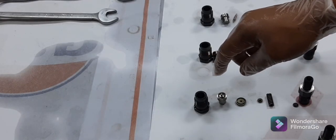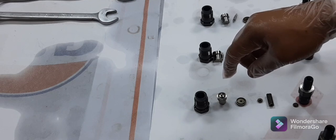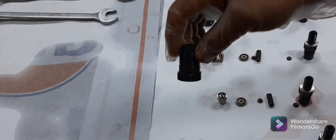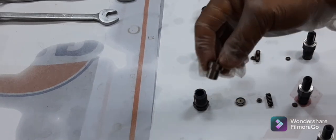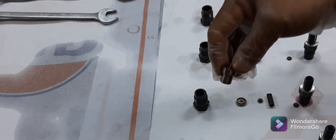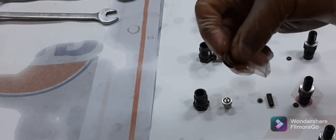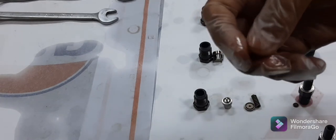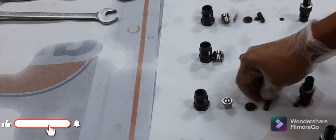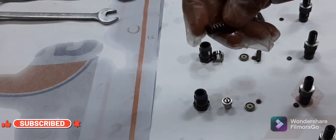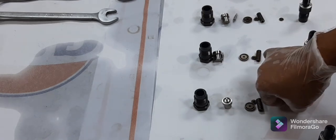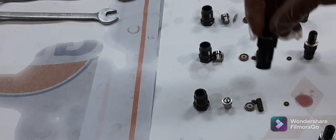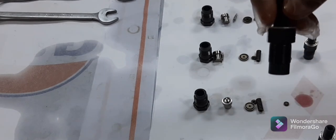We will name these parts of our injector nozzle. This is a retainer nut, nozzle body, spacer, spring seat, nozzle spring, shim, and nozzle holder body.